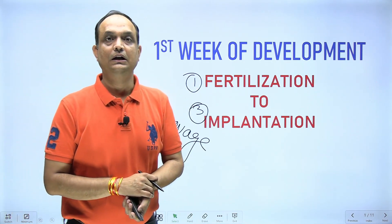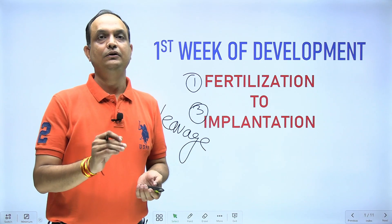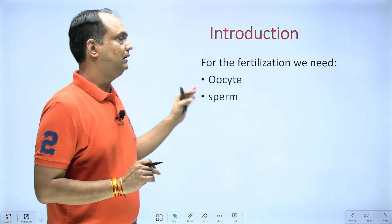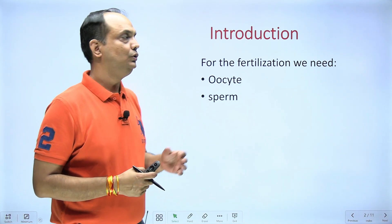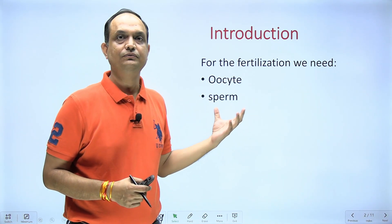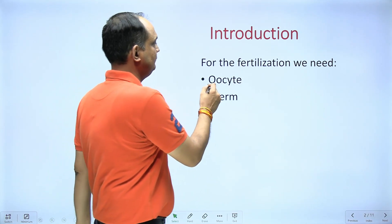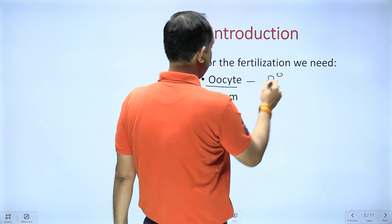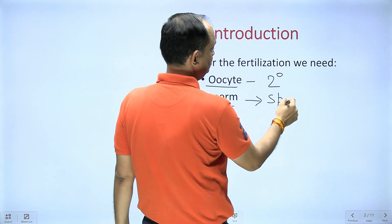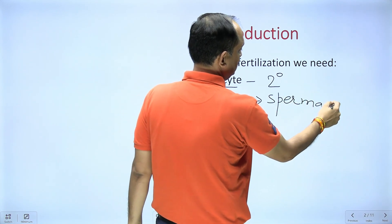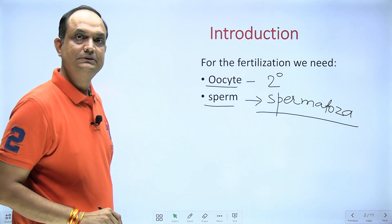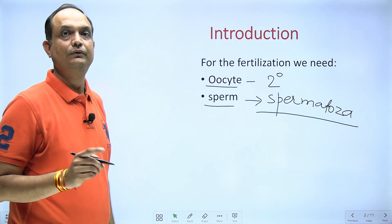For fertilization, we always require two gametes: the female gamete, which is in the form of a secondary oocyte, and we need the male gamete, known as spermatozoa. Both gametes meet in the fallopian tube, and before meeting, there needs to be priming of these two gametes.